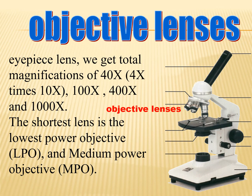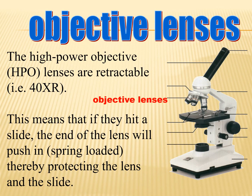The shortest lens is the lowest power objective, or LPO. Next is the medium power objective, the MPO. We also have the high power objective, HPO, whose lenses are retractable. Another lens is the OIO — the oil immersion objective. The special oil used with the oil immersion objective is cedar oil. If the lens hits a slide, the end of the lens will push in or spring-loaded, thereby protecting the lens and the slides.